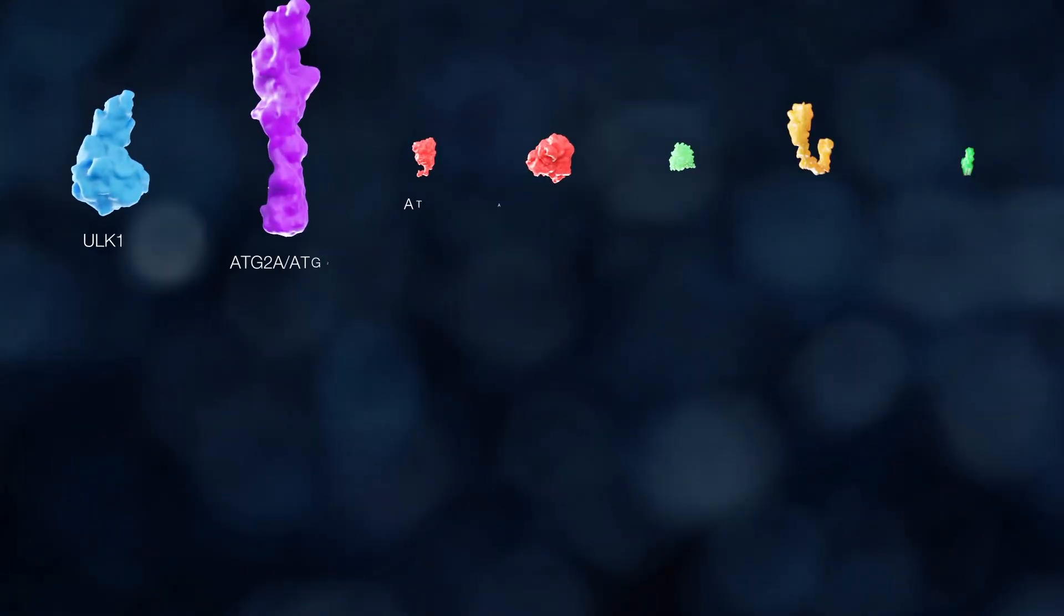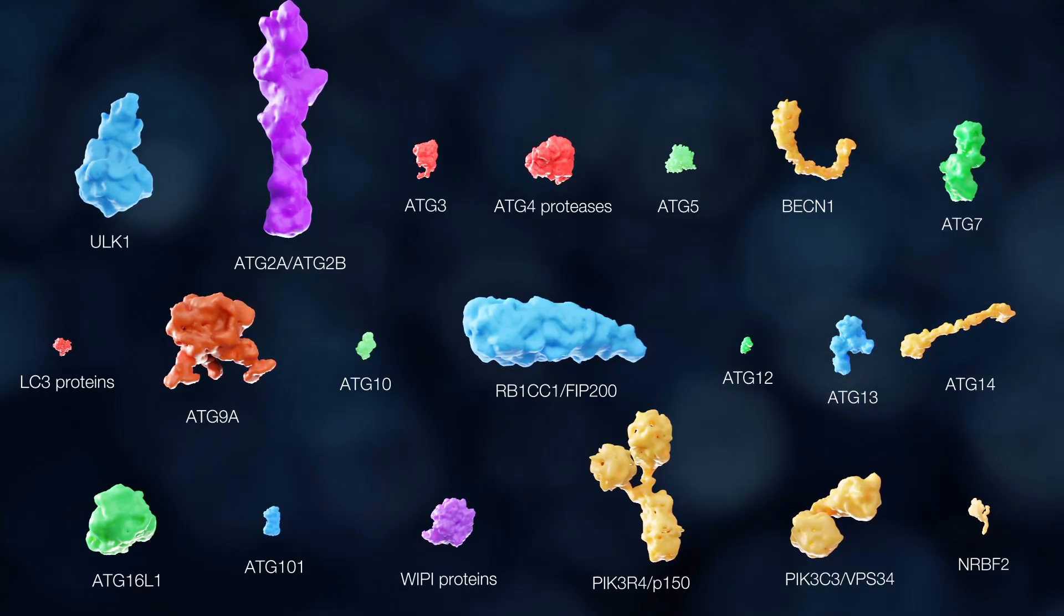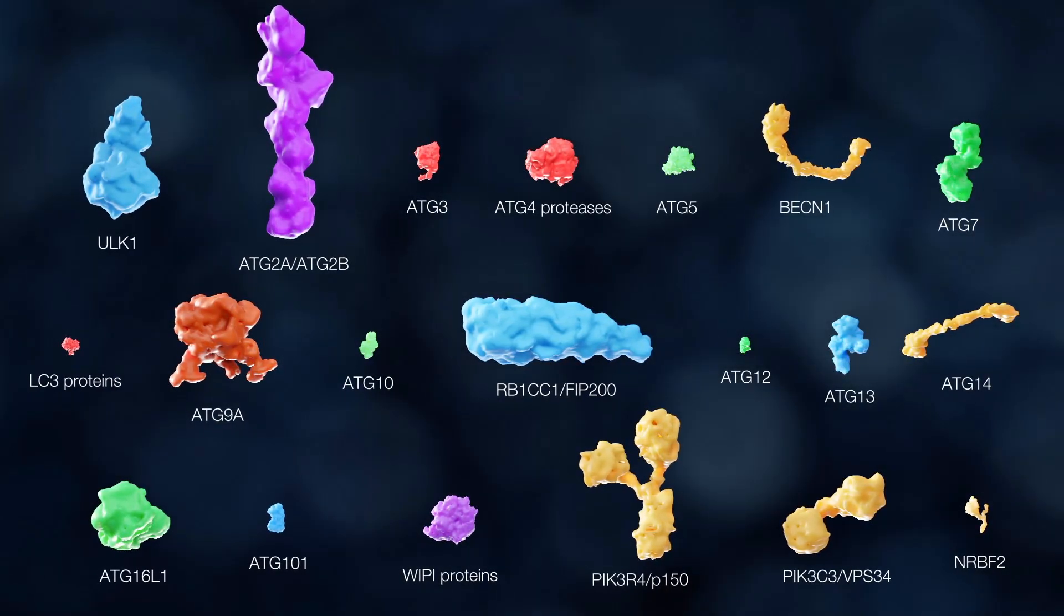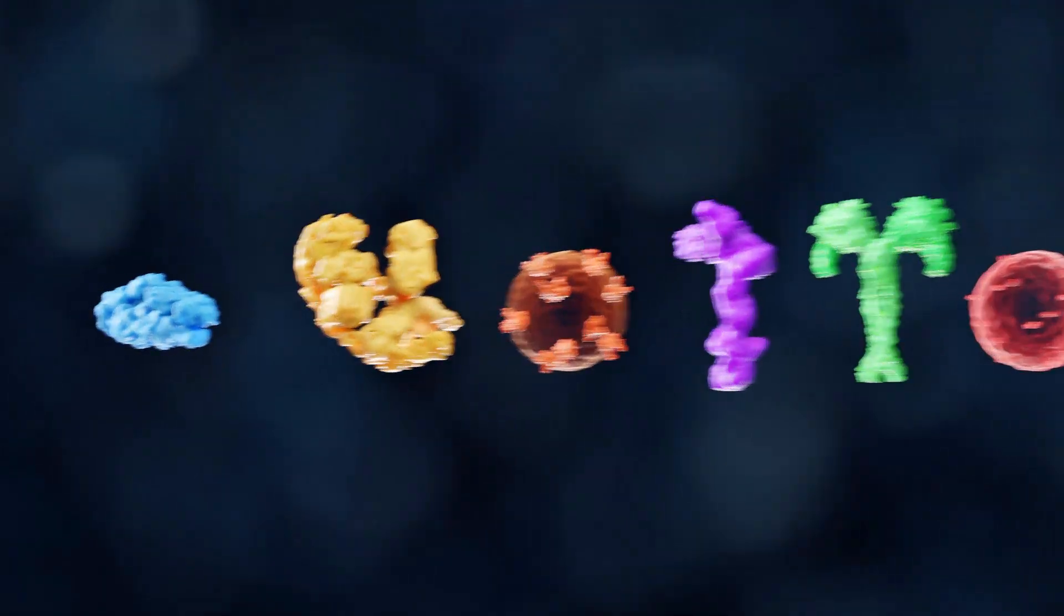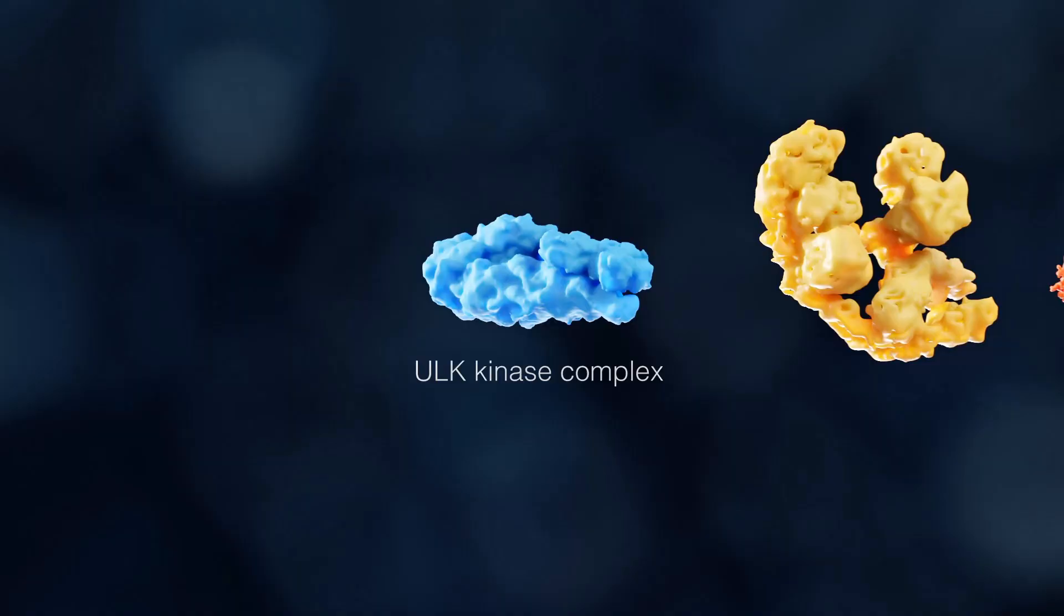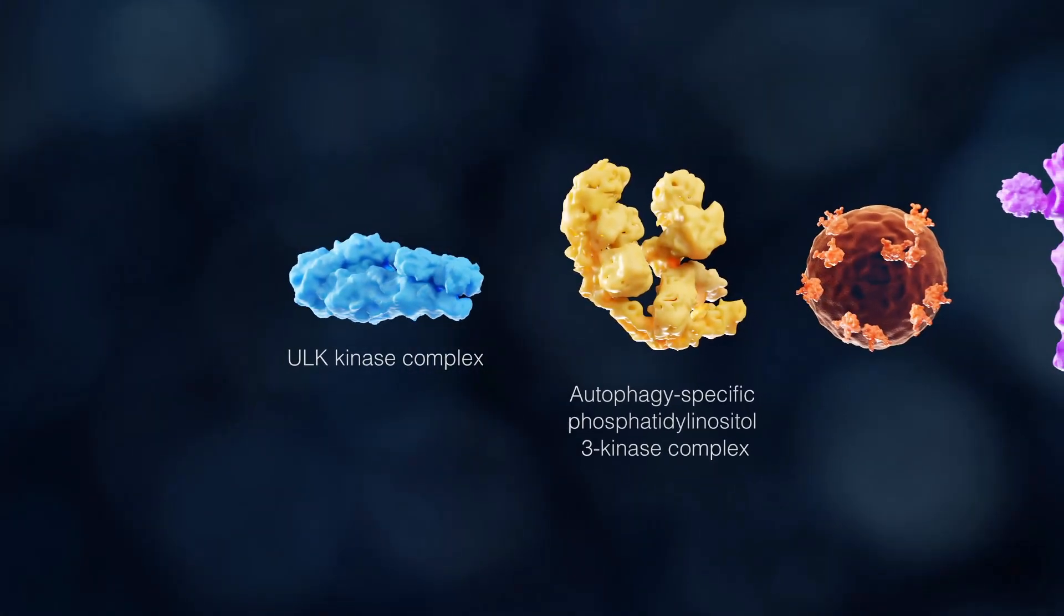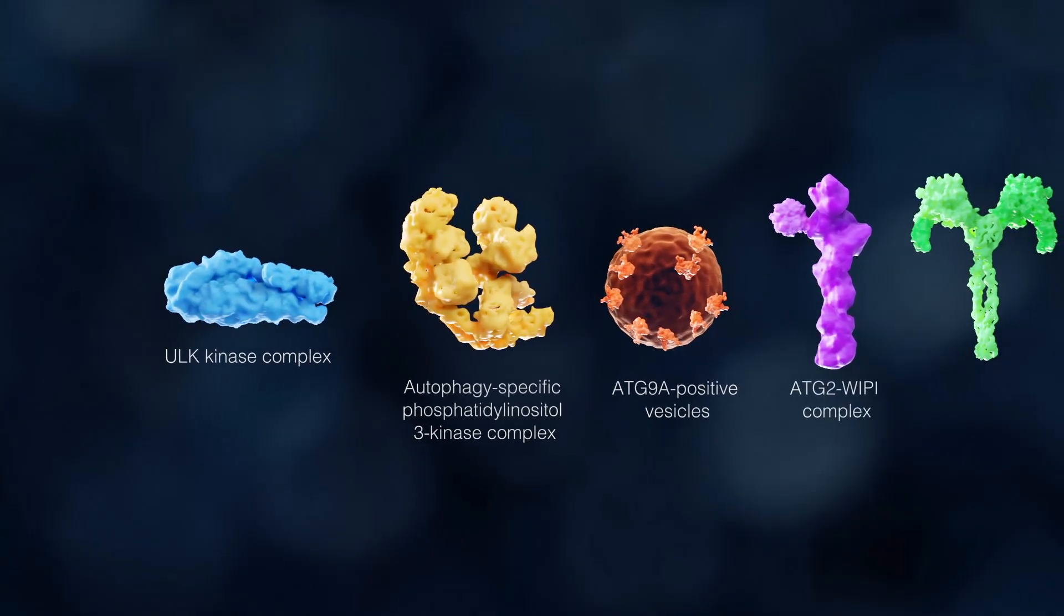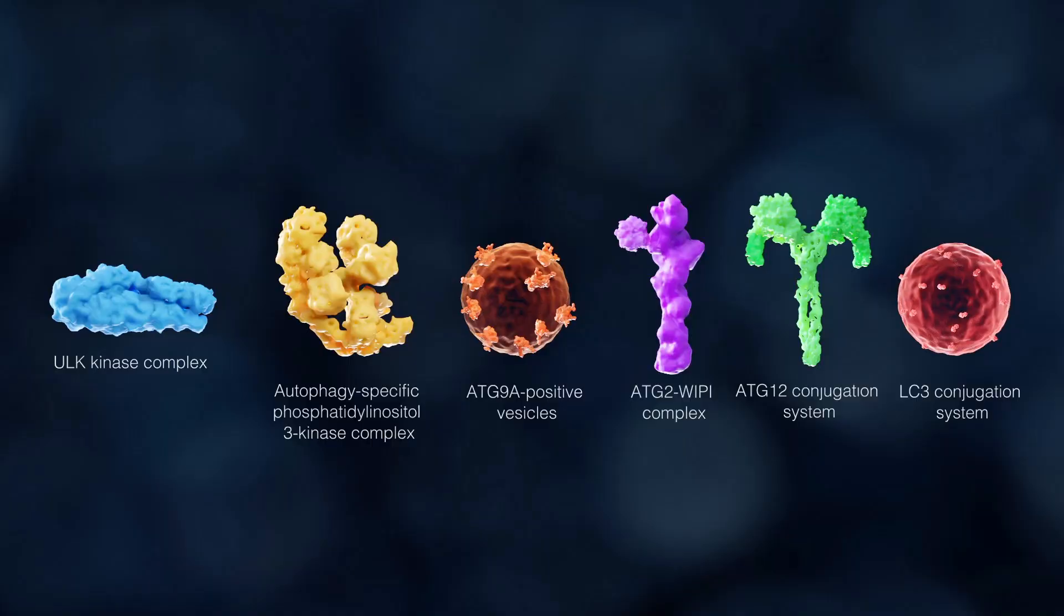Around 20 autophagy-related or ATG proteins compose the highly conserved core machinery that controls autophagosome biogenesis in all eukaryotes. The proteins encoded by these genes have been divided into six functional modules: the HULK kinase complex, the autophagy-specific phosphatidyl inositol 3 kinase complex, the ATG9A-positive vesicles, the ATG2-VP complex, the ATG12 and the LC3 conjugation systems.